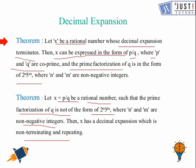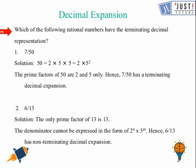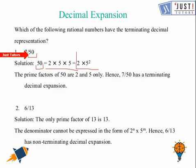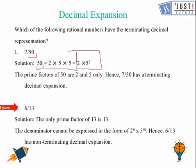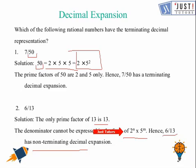You will have a clearer idea if you try some questions. Which of the following rational numbers have a terminating decimal representation? First, 7 over 50 — it is already in simplified form. Factorizing 50 gives the form 2 raised to the power n times 5 raised to the power m, so this is a terminating decimal expansion. For 6 over 13, the only prime factor of 13 is 13 itself, so you cannot express it in that form — meaning 6 over 13 has a non-terminating decimal expansion.